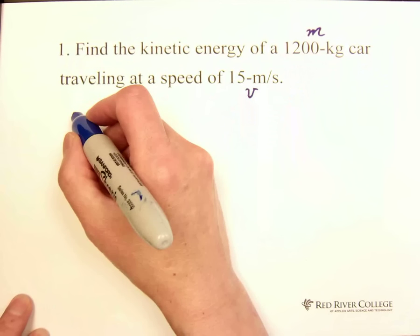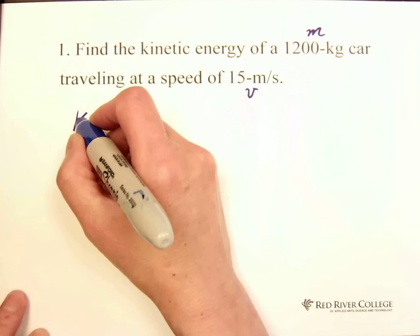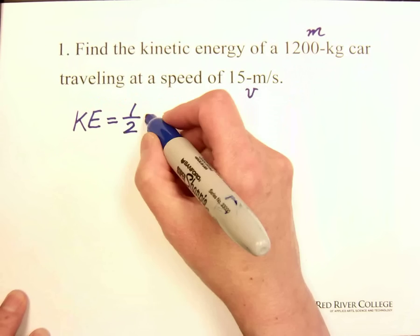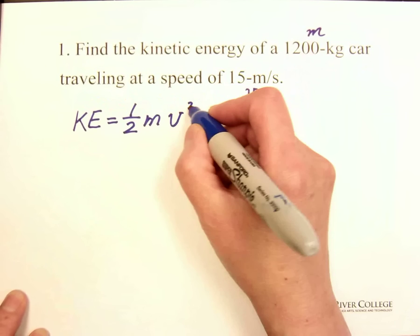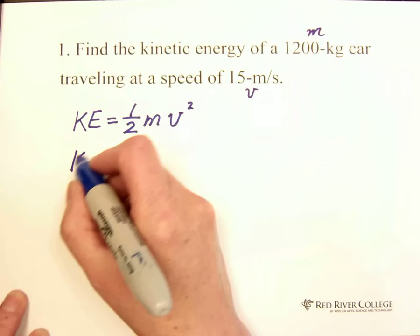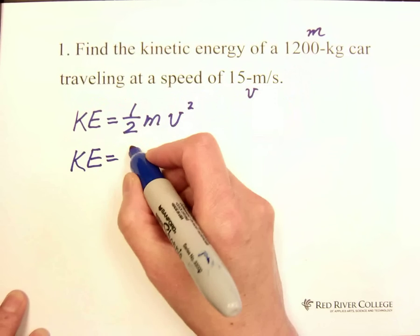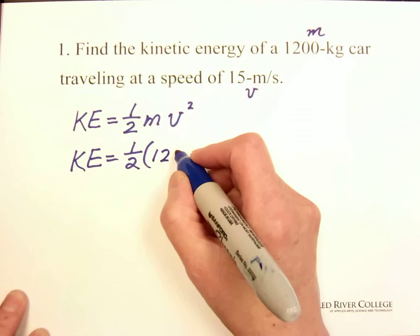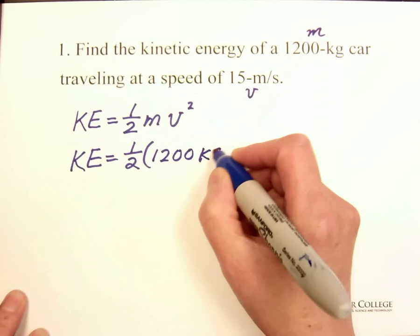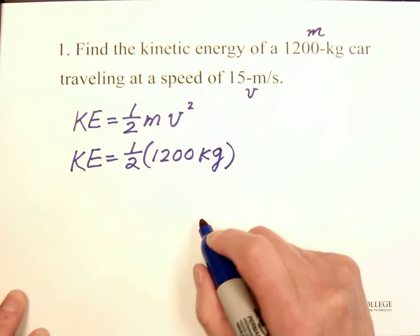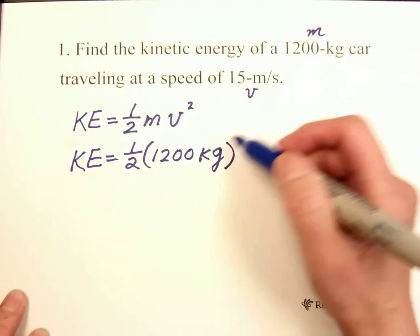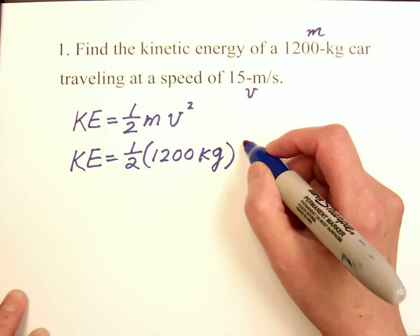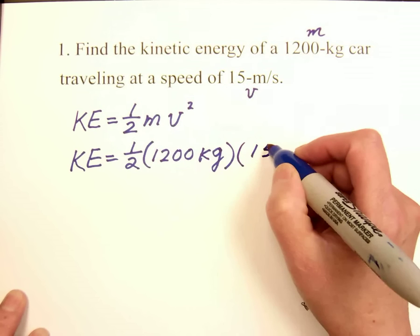And speed of 15 m per second is speed. Follow formula. We have KE equals 1 over 2 mv squared. Make sure this is kg. We need kg. Given gram, you need to convert to kg.